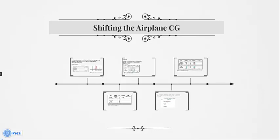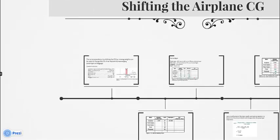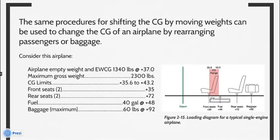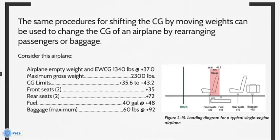Shifting the airplane CG. The same procedure for shifting the CG by moving weights can be used to change the CG of an airplane by rearranging passengers or baggage.